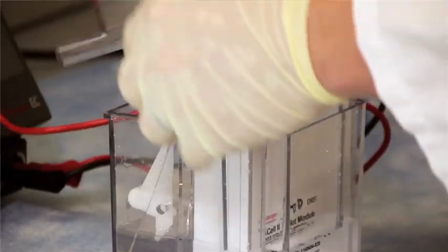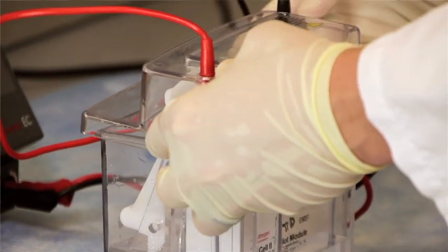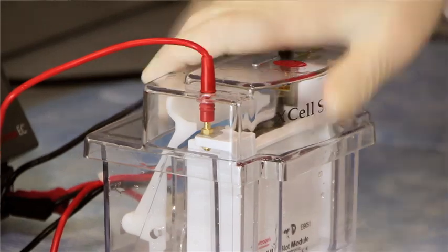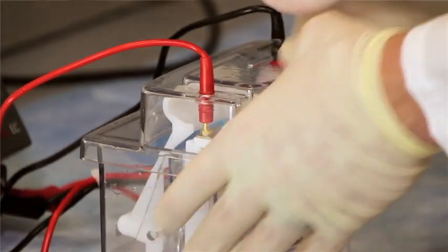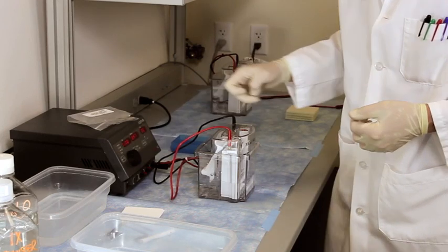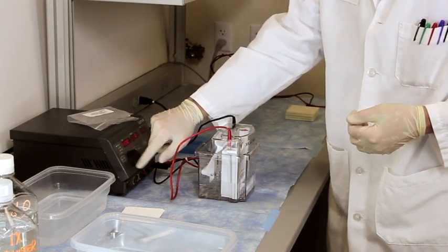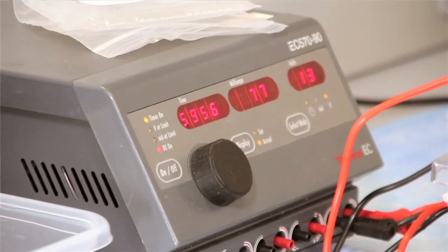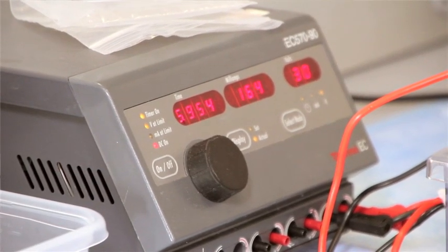And now we're going to put the lid on top of our XCell and set our voltage for about 30 volts and one hour. Get our timer started. And we've got about an hour before we're moving on to the next step.